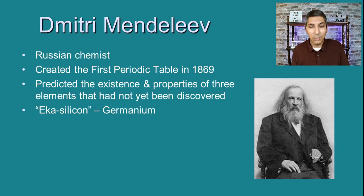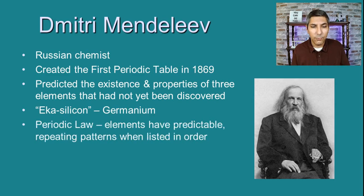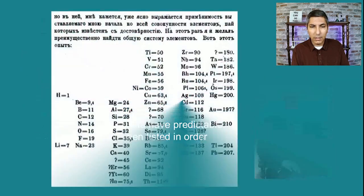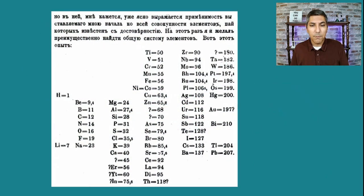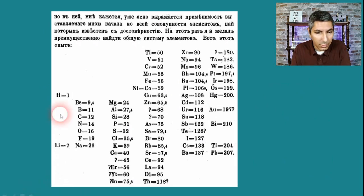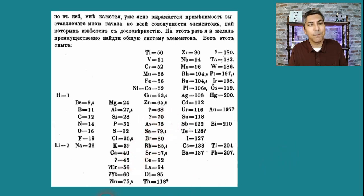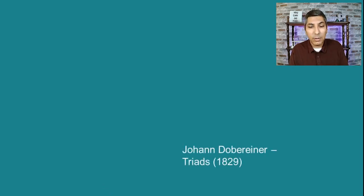We give Mendeleev credit for coming up with the periodic law. The periodic law basically says that elements have predictable repeating patterns when they're listed in order. Here we have Dmitry Mendeleev's periodic table — one of the first he created. As you can see there are several elements we're very familiar with, like hydrogen, boron, carbon, oxygen, and lead, although there were several spaces he left in his periodic table. We have to admit that Mendeleev was not the first person who noticed patterns in the elements.